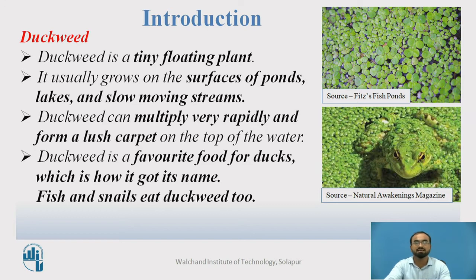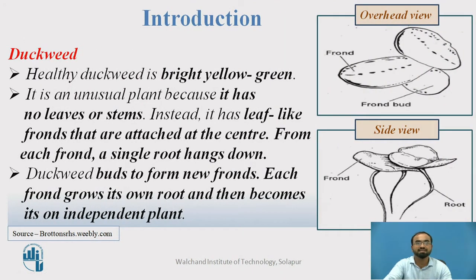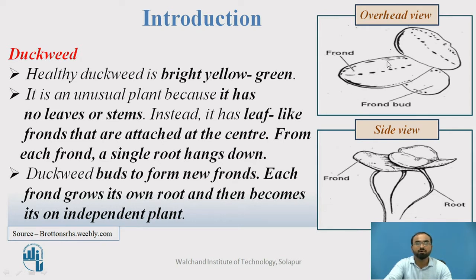Fish and snails eat duckweed too. Healthy duckweed has a bright yellow-green color. It is an unusual plant because it has no leaves or stems. Instead, it has leaf-like fronds that are attached at the center. From each frond, a single root hangs down. If you look at the diagram in the overhead view, you will see the plants have frond-like leaves.